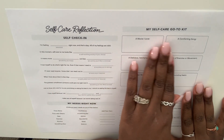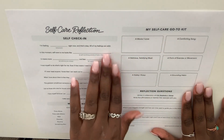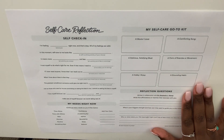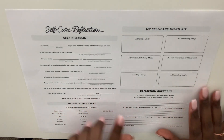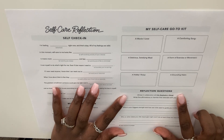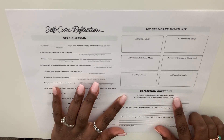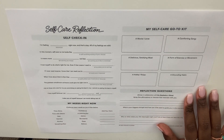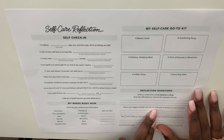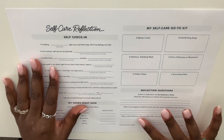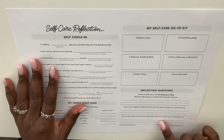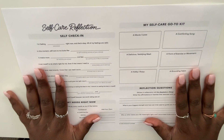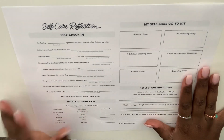Over here we have 'my self-care go-to kit' — so we're talking about moves you love, a grounding habit, form of exercise, hobbies. Really nice. And then lastly we have reflection questions, written in collaboration with Dr. Stephanie J. Wong. So: write five affirmations or mantras that resonate with you; what is your biggest strength and how can you use it to guide you in this moment; and who or what makes your life meaningful right now — list at least three and describe why. Super excited about how I'm going to use this in my planner.